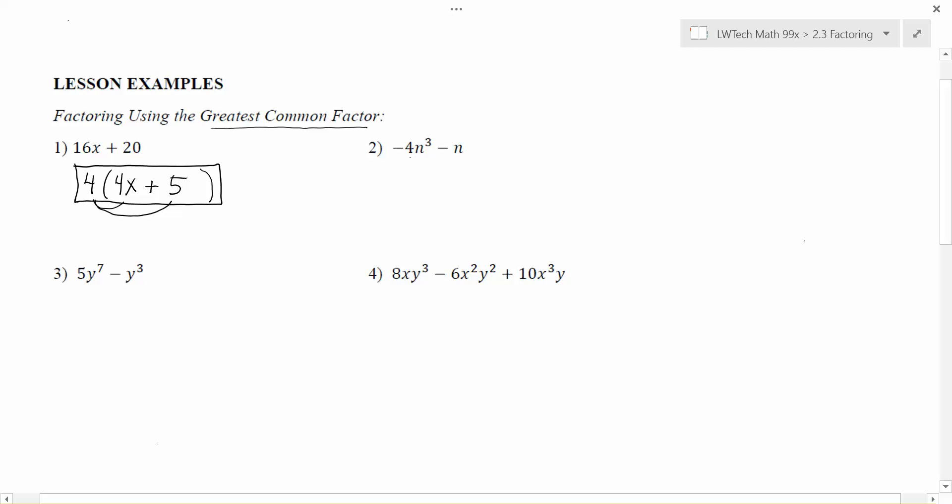In problem number two, notice that we have -4n³ and -n. Each of these expressions has an n in them, so we can pull them out. We also usually like our leading term (the first number in our expression) to be positive. So even though I could just pull out an n, I'm actually going to pull out a negative n. The reason is it's going to make the leading term inside the parentheses be positive.